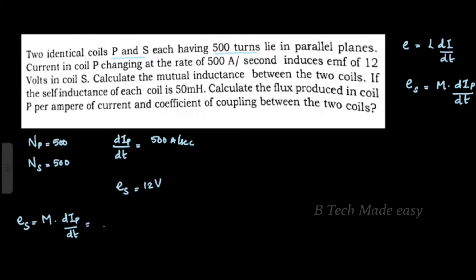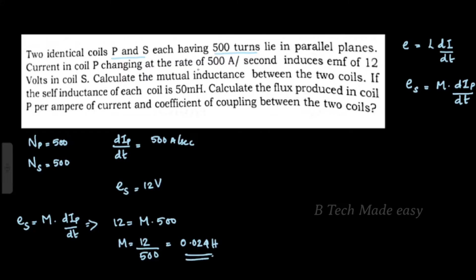We can substitute the values: 12 is equal to M multiplied by dIP/dt, which is 500. Therefore M is equal to 12 divided by 500, which gives 0.024 Henry. We now have the mutual inductance value of 0.024 Henry.